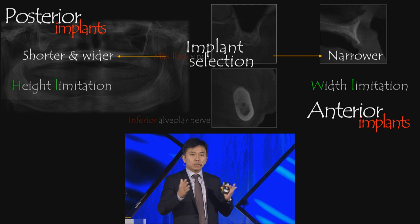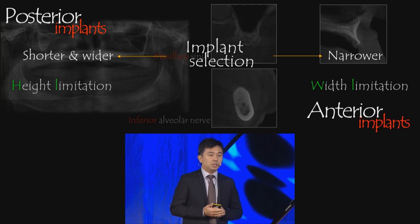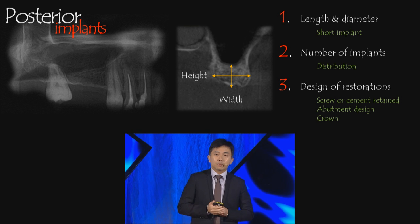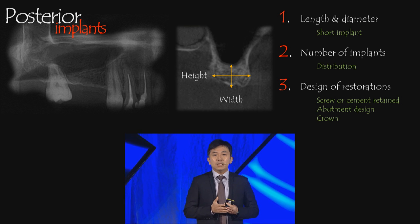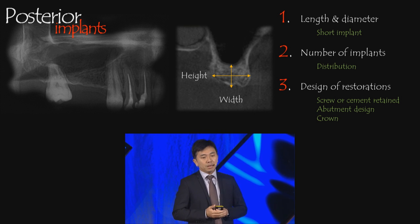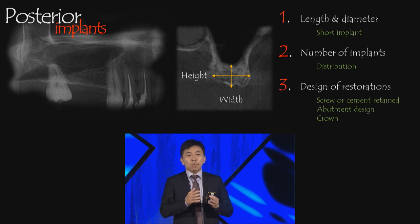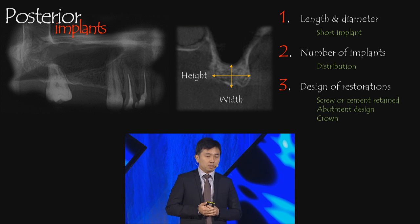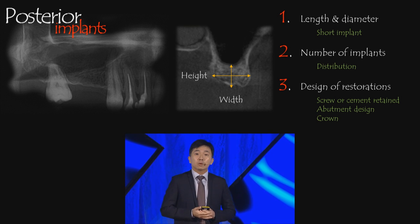In the anterior, we are moving towards narrower and slightly longer implants so that we can engage the base of the bone. These limitations lead into what I'm going to discuss today: first, the size of implants — length and diameter; second, distribution of implants in terms of number and position; and finally, the design of restorations — screw or cement retained, abutment design, and crown material selection.